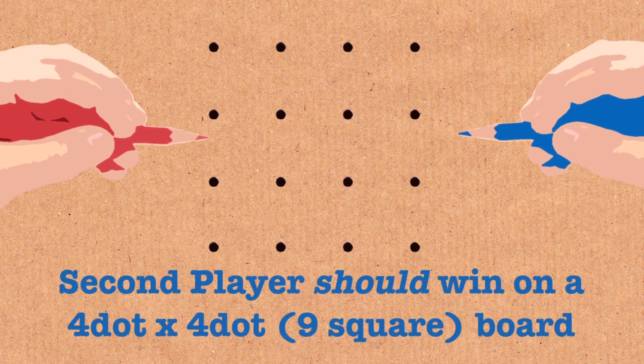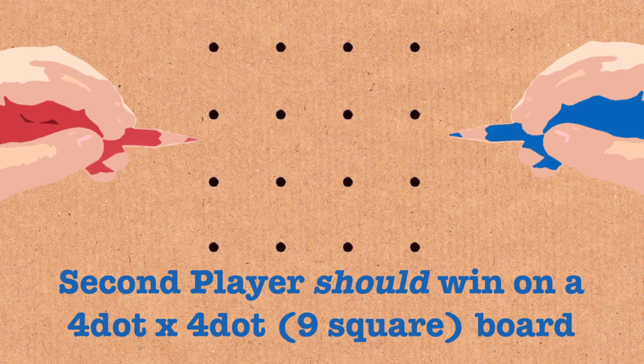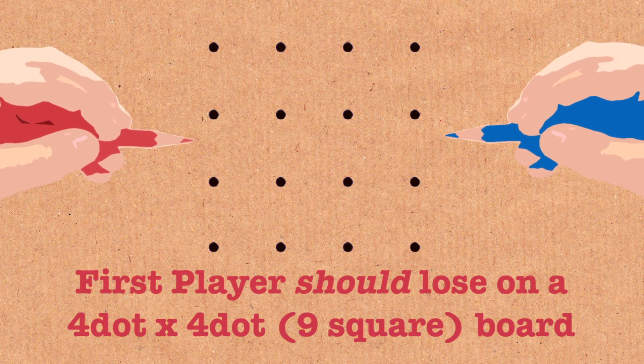The second player strives to make an odd number of long chains and on this board he can do it and I'll explain how. And the first player strives to make an even number of long chains.